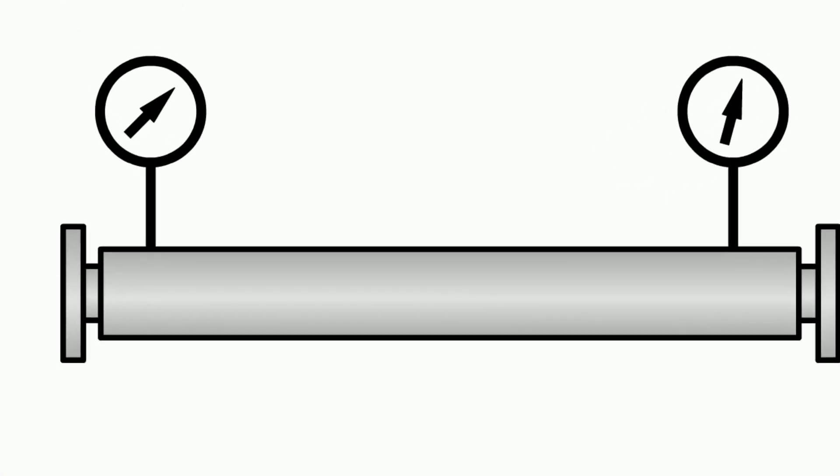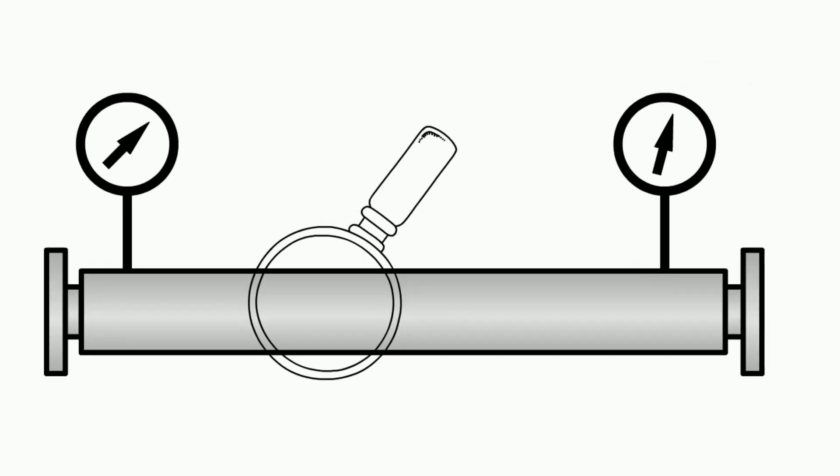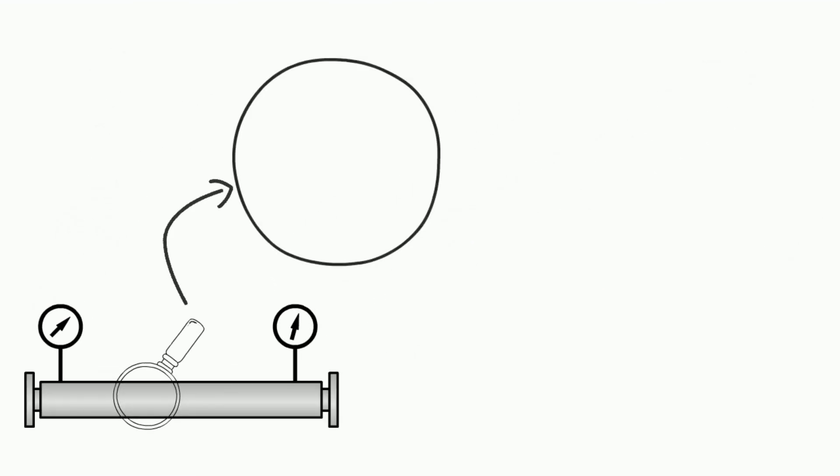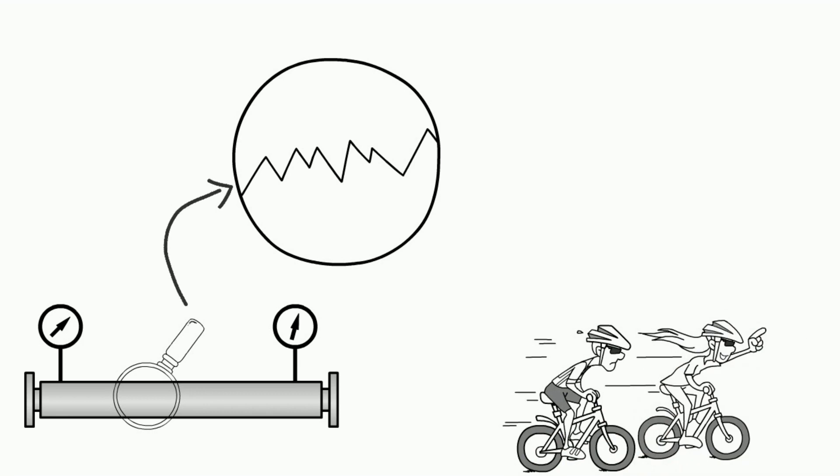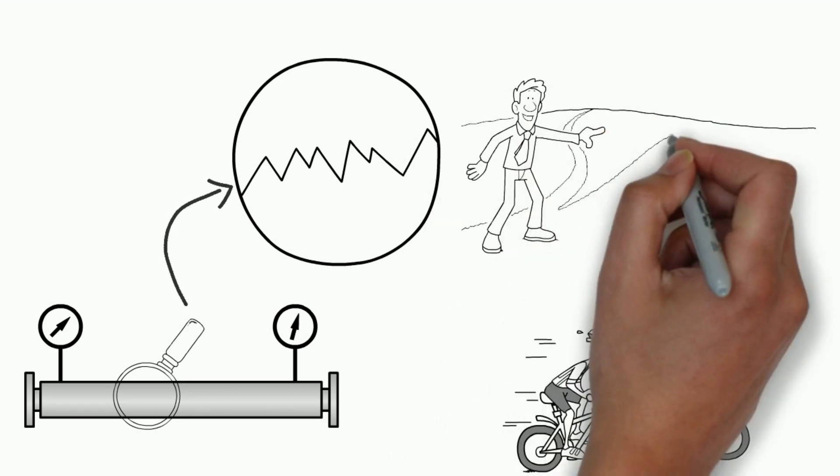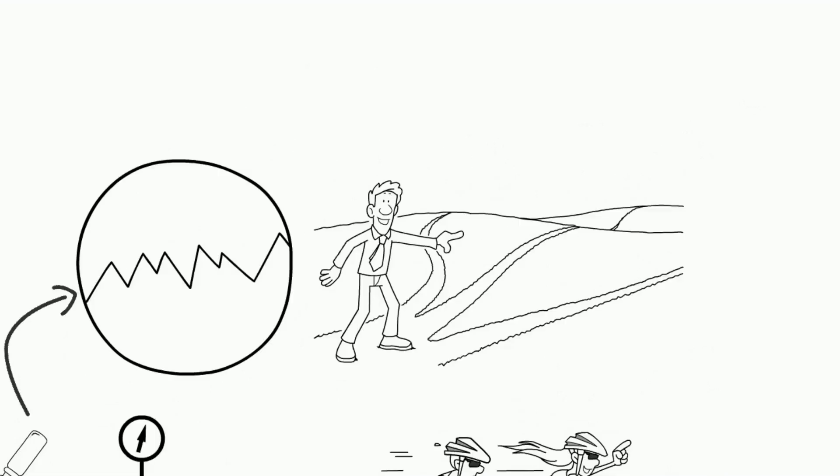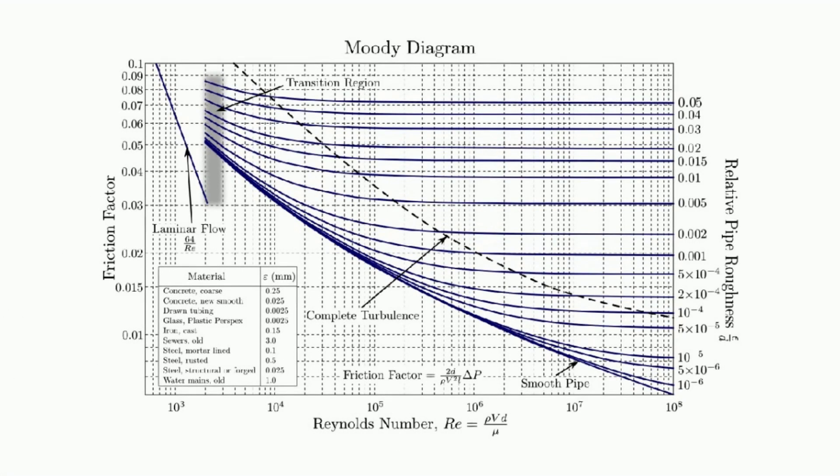Finally, the roughness of the pipe walls can also impact frictional head loss. If the walls of the pipe are rough, the fluid will experience more resistance and thus a greater drop in pressure. Smooth walls, on the other hand, will reduce the amount of resistance and therefore the amount of head loss. This is taken care of by the friction factor in the equation. There are many ways to calculate friction factors. One of the ways is the Moody chart.